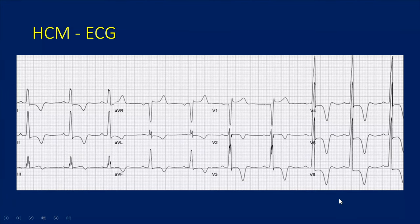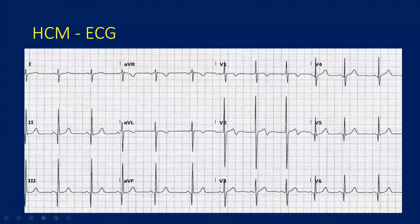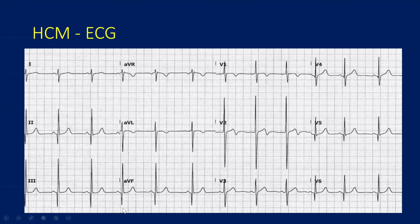This second ECG is also one of the classic exam ECGs for HCM — this is the ECG for septal HCM. Here we see what we call a dagger Q-wave: very large, very sharp and deep Q-waves in the inferolateral leads. This is because in septal HCM the septum is so thick that there's loss of conduction through the septum at the initial phase of depolarization, giving you this exaggerated Q-wave. So this is septal HCM.